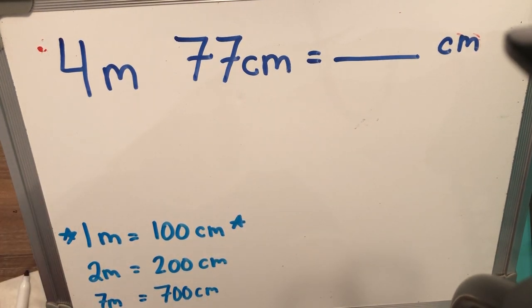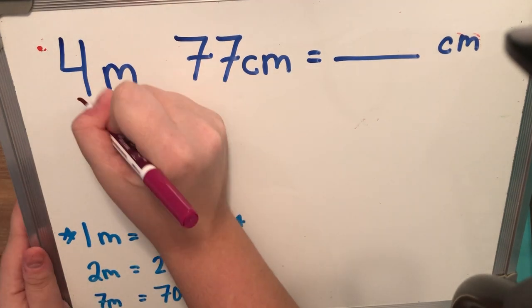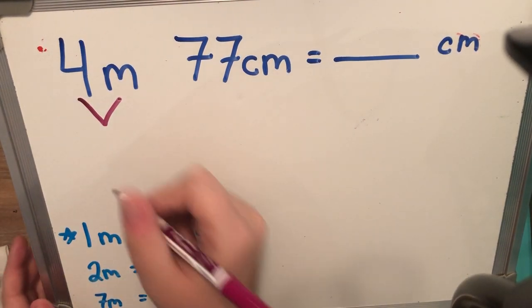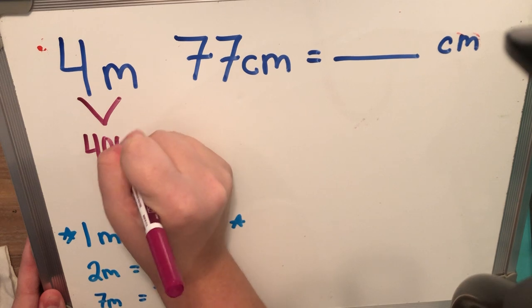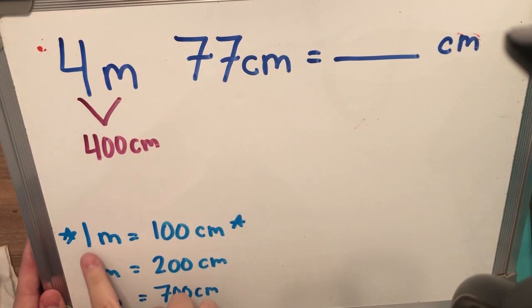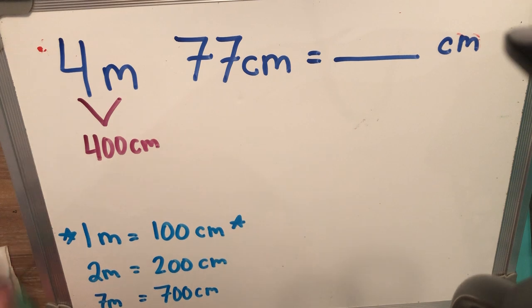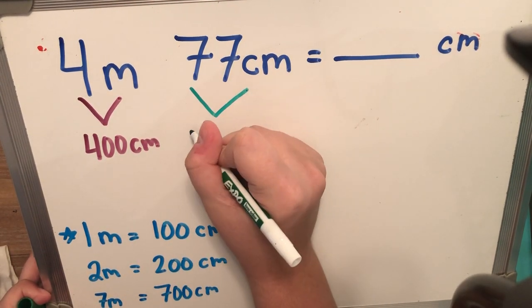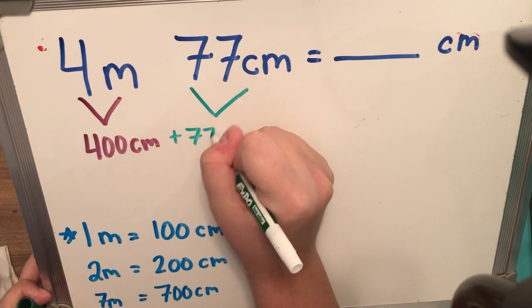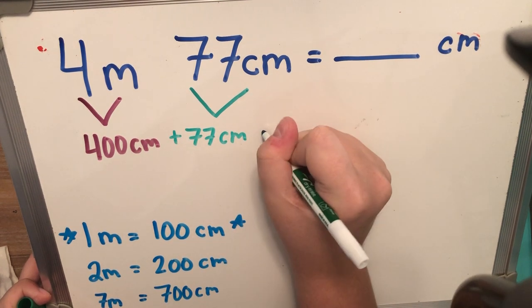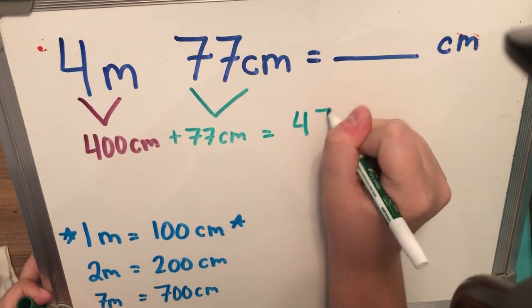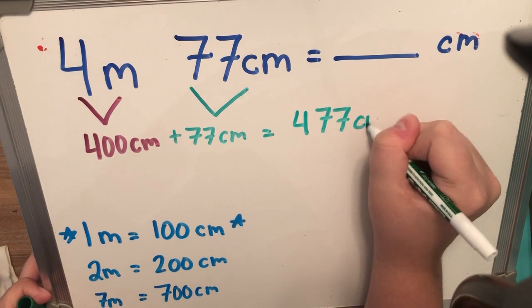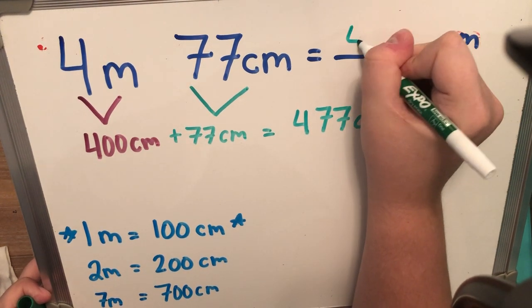Okay. So, knowing that information, 4 m is worth 400 cm based on what our golden ticket is showing us. Plus, I'm going to add to that 400 cm, I'm going to add 77 cm, which is going to give me a total of 477 cm, which is what we had to find.